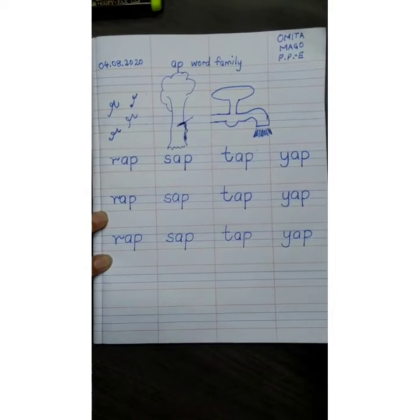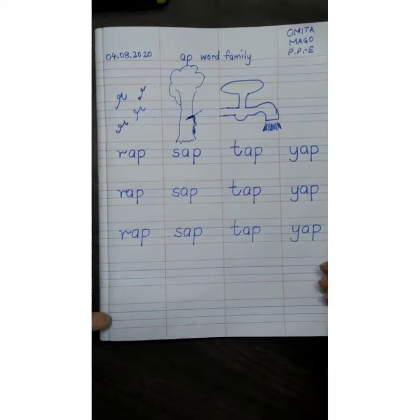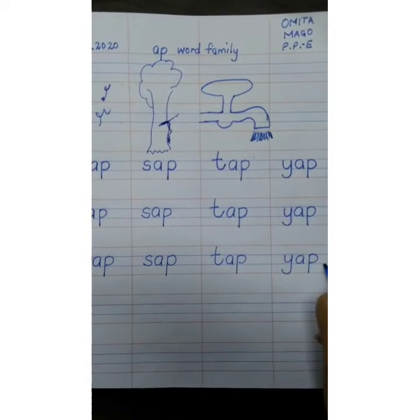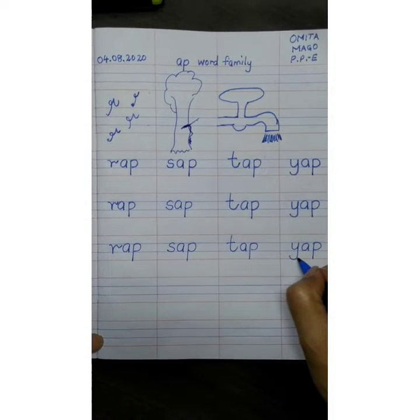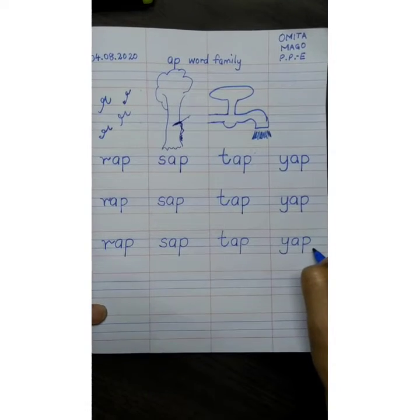Now, Omita Maam said Y, A, P. She said yer, ap, yap. Nobody is going to say Y, A, P. We are going to say it phonetically. Okay, we will read it as yer, ap, yap. Read it again one more time.